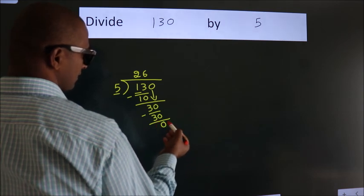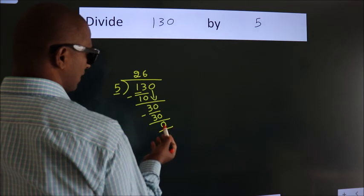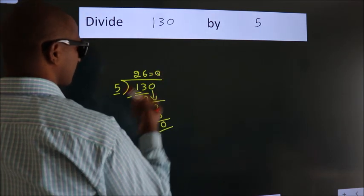After this, no more numbers to bring down. And we got remainder 0. So this is our quotient.